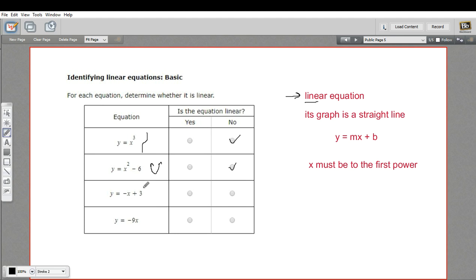And here we have y equals negative 9x. Well, that's just multiplying a number by x, so that's totally fine. Again, this is a linear equation. So that is a little bit of work in identifying linear equations.